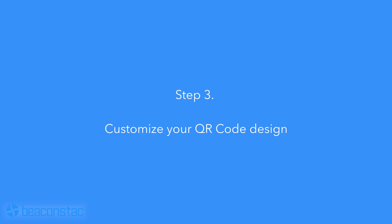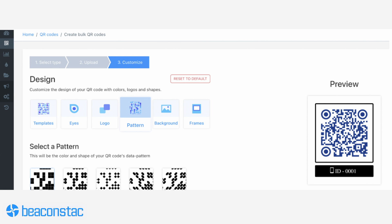Step 3: when you're done uploading, it's time to move on to the fun part — customizing your QR code design. BeaconStack provides you with a wide range of customization options for your bulk QR codes. Change colors, patterns, eyes, and backgrounds until you get a design consistent with your branding. And don't forget to add your logo. You'd also want to give your design some good thought since it's going to apply to your entire batch.